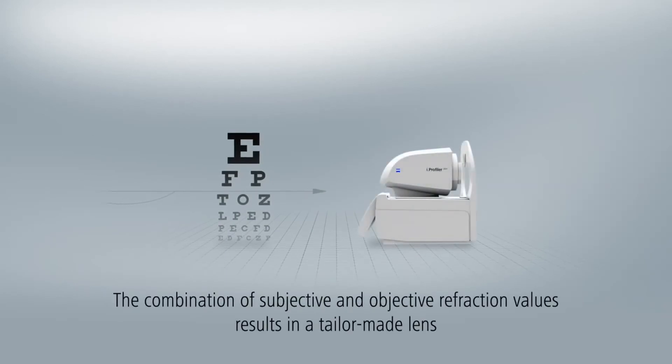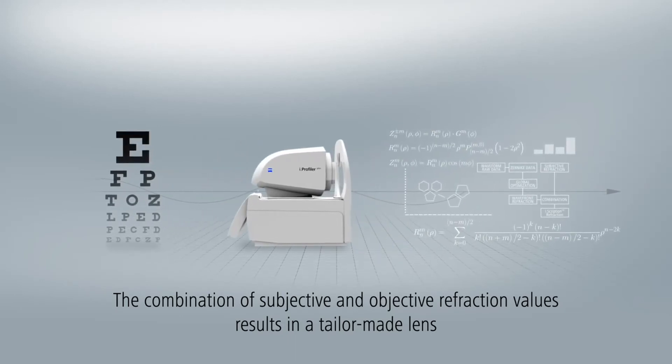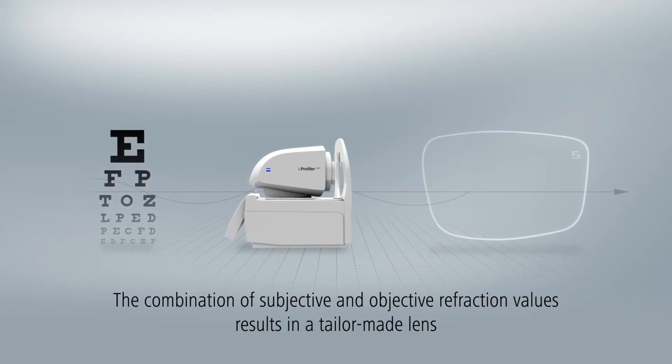The subjective and objective refraction values are then combined using a complex algorithm and the diopter powers calculated. The Eye Scription technology subsequently transfers these values to each Zeiss lens.